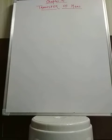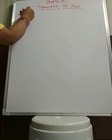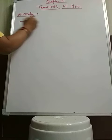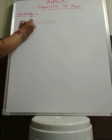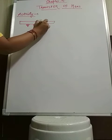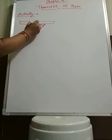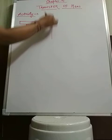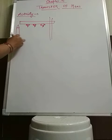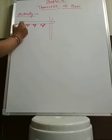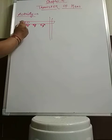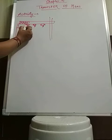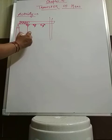We will conduct an activity to show conduction. We take a metallic rod and stick some thumb pins on it using wax. The metal rod is placed on a stand and a candle provides heat at one point. Since the rod is made of solid, the molecules present in it will transfer the heat energy. When this heat energy transfers from one place to another, it melts the wax first at the nearest pin, and that thumb pin falls down.